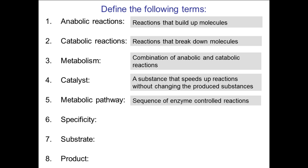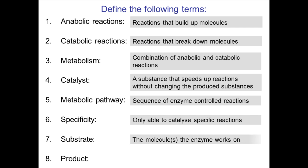Most metabolic reactions that happen within the body involve a specific number of different reactions and they are controlled by different enzymes. Specificity refers to only being able to catalyze specific reactions, and so enzymes are very, very specific. A substrate is the molecule that an enzyme works on — again, they are very, very specific. And the product refers to the molecules that are produced by the enzymes.